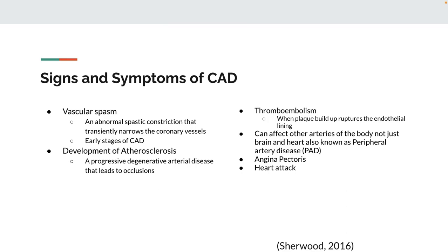Now that we know what coronary artery disease is, we can look at some of the signs and symptoms. In the early stages, there are some vascular spasms — some abnormal narrowing of the coronary arteries. Then as we progress, we start to develop atherosclerosis, which can lead to occlusions or complete blockages of the heart.